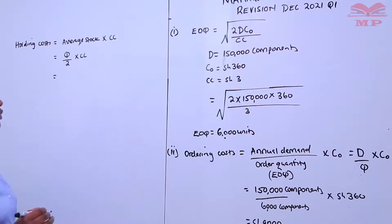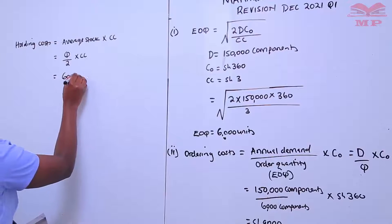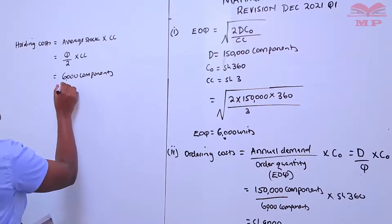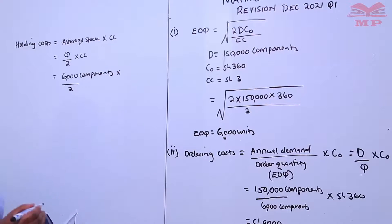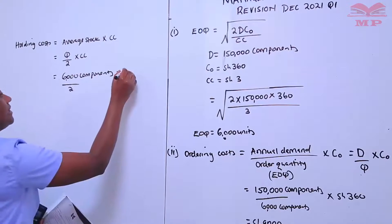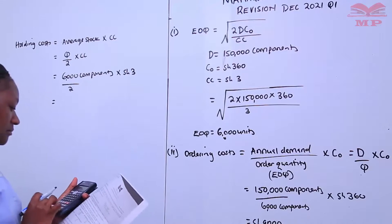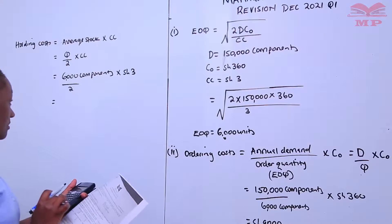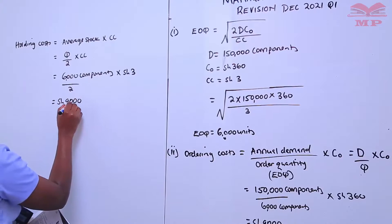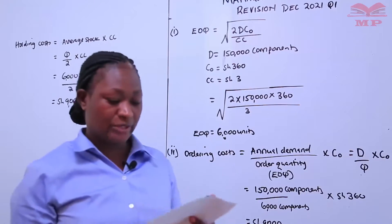Our Q here is 6,000 components. We divide 6,000 by 2, multiplied by the carrying cost per annum, which is given at 3 shillings. This gives us a total of 9,000 shillings. That completes part two of the question.